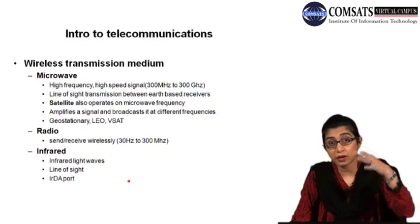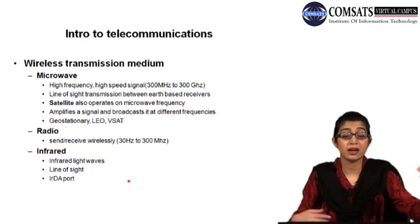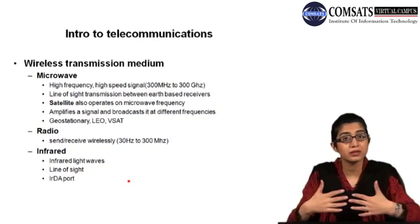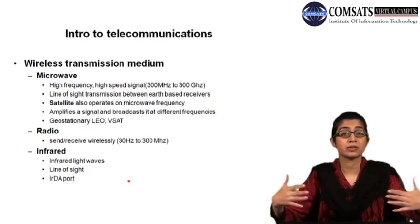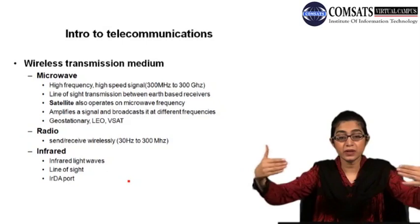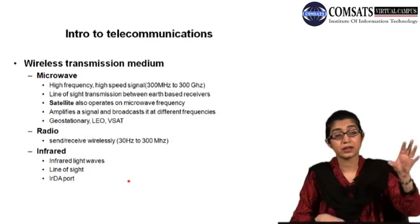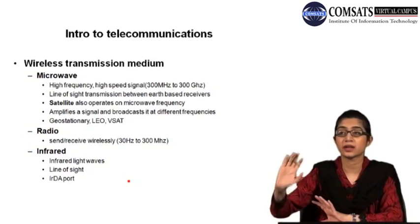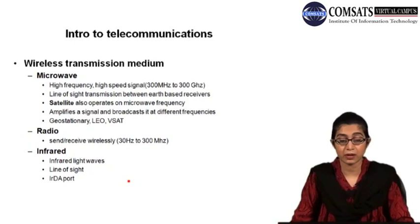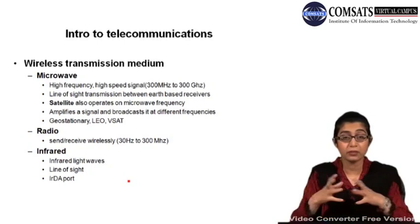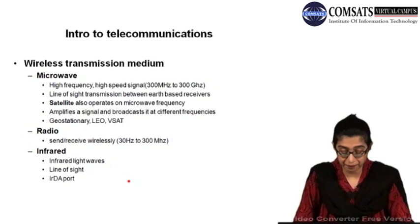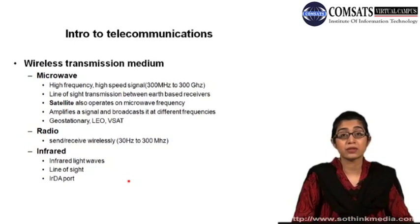Microwave transceivers are placed on top of buildings because they require a line-of-sight transmission — their signals cannot work if they have some kind of obstruction, so one antenna must always be in the line of sight of the other. Earth-based receivers take a signal, amplify it, and send it to another receiver — this is how transmission moves on with microwave signals. The medium is air because it is wireless, using high frequencies. The station that receives or transmits is called a microwave station.